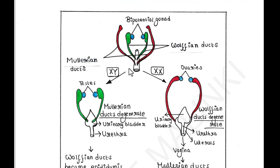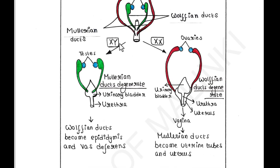This is the overall picture. This is the bipotential gonad, shown in blue. Each has two Wolffian ducts as well as two Müllerian ducts. Now, if the fetus has XY chromosomes, the Müllerian ducts will be degenerated and the Wolffian ducts will remain — the Wolffian ducts become epididymis and vas deferens. In the case of XX, the Wolffian ducts will be degenerated and the Müllerian ducts will remain, becoming uterine tubes and the uterus.